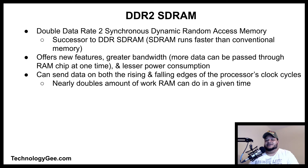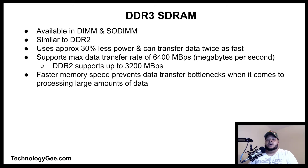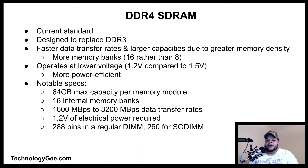DDR3 SDRAM is available in both DIMM and SO-DIMM form factors. DDR3 SDRAM is similar to DDR2 but uses approximately 30% less power and can transfer data twice as fast. DDR3 supports a maximum data transfer rate of 6,400 megabytes per second, while DDR2 supports up to 3,200 megabytes per second. The faster memory speed prevents data transfer bottlenecks when processing large amounts of data.